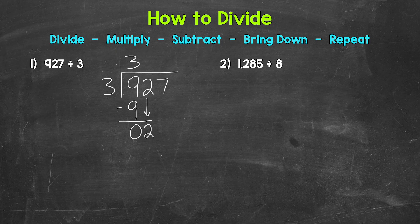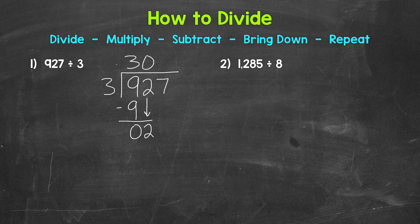After we bring down, we repeat — go back to divide. We have 2 divided by 3. How many whole groups of 3 in 2? None — we can't do that. This is a common place where people get stuck or make a mistake. Since we don't have any whole groups of 3 in 2, we put a 0 up top above the 2. We're just going through our normal division steps — we just happen to have a 0 in our answer. Now we multiply: 0 times 3 is 0. Subtract: 2 minus 0 is 2. Bring down the 7.